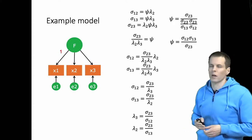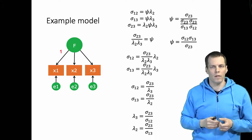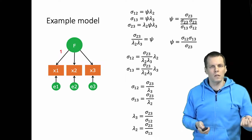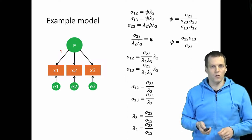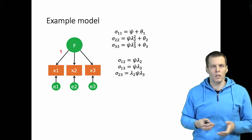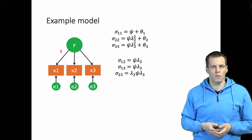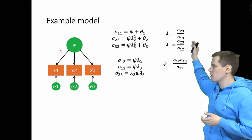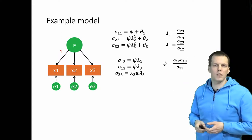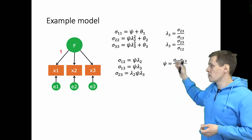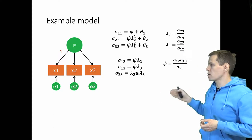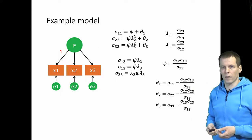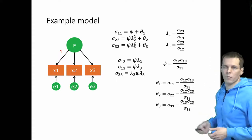So psi is the product of two covariances divided by one covariance. Now we have solved the lambdas and psi, and we just need to solve the thetas to prove that this model is fully identified. We go back to the original diagonal equations, plug in the now-solved values of lambda_2, lambda_3, and psi, and solve for the three error variances theta_1, theta_2, and theta_3. This completes the proof.